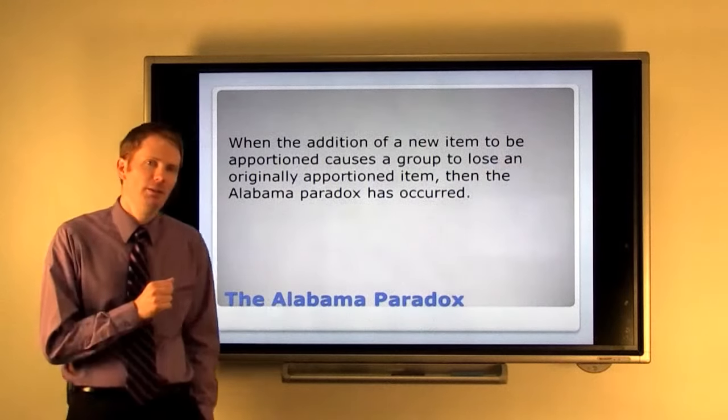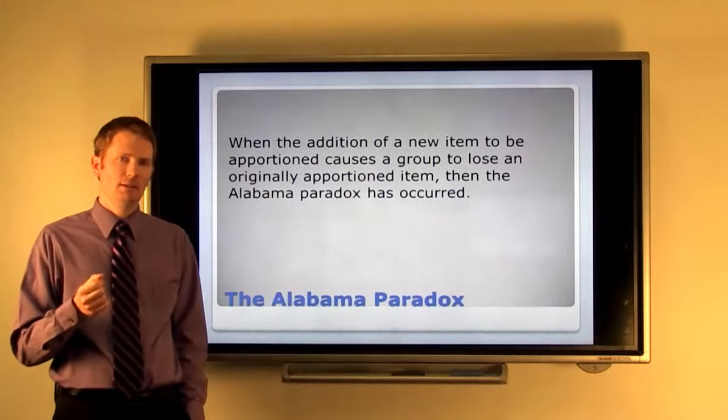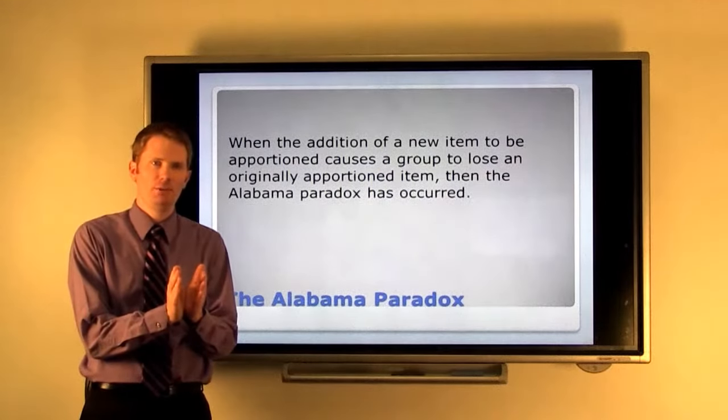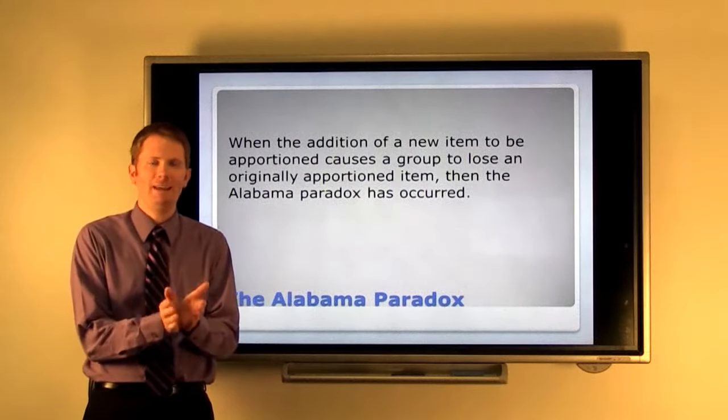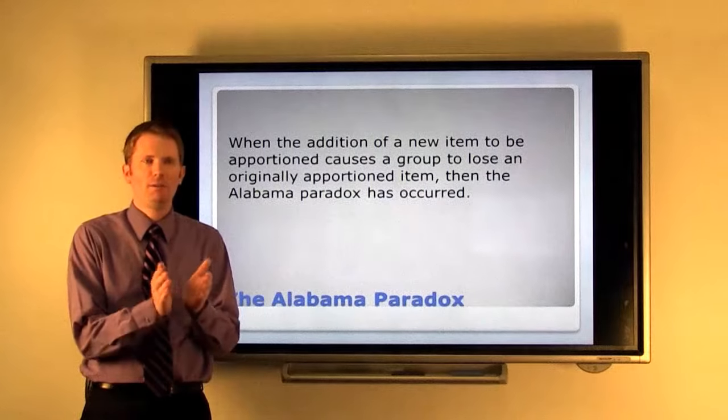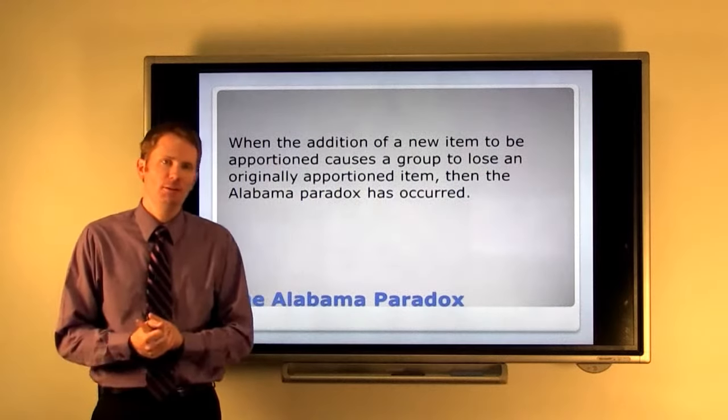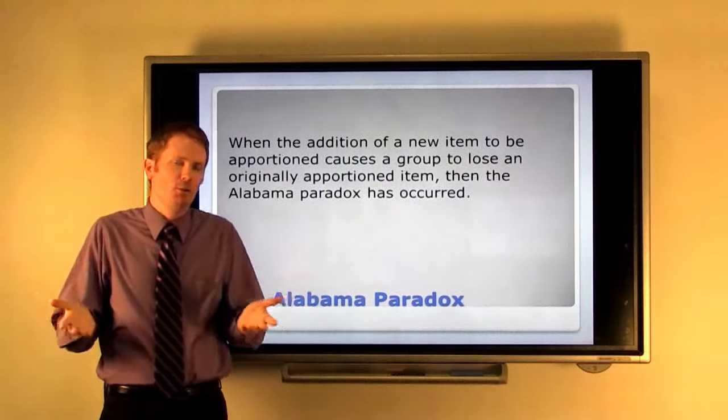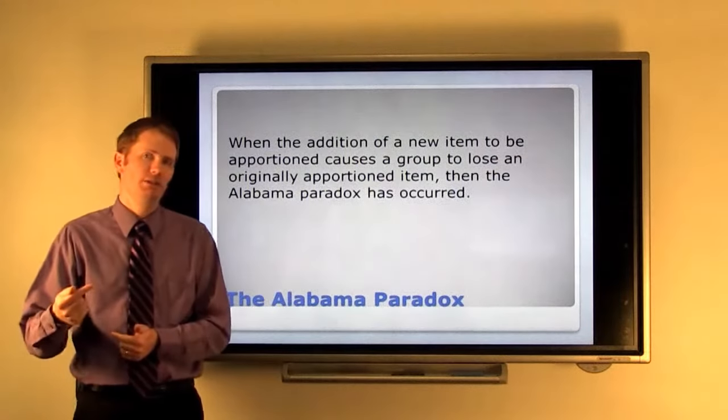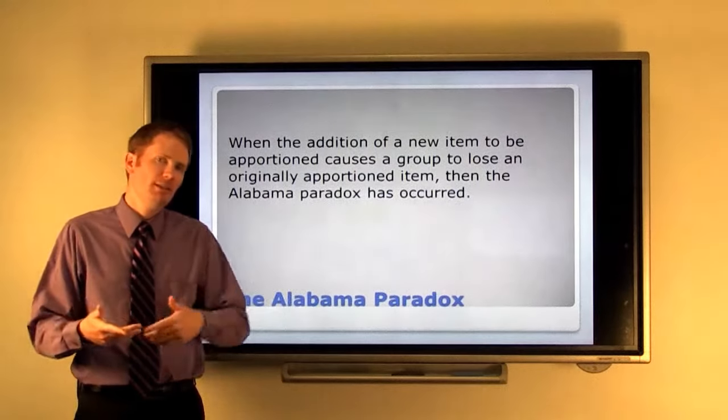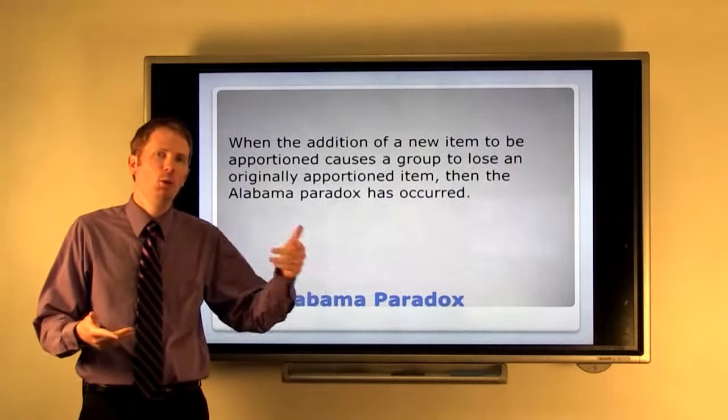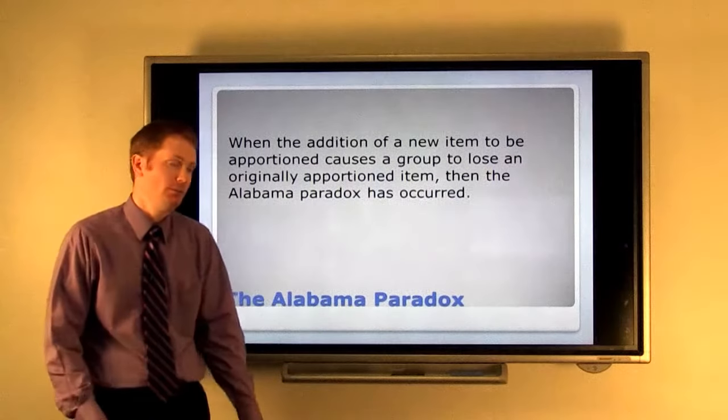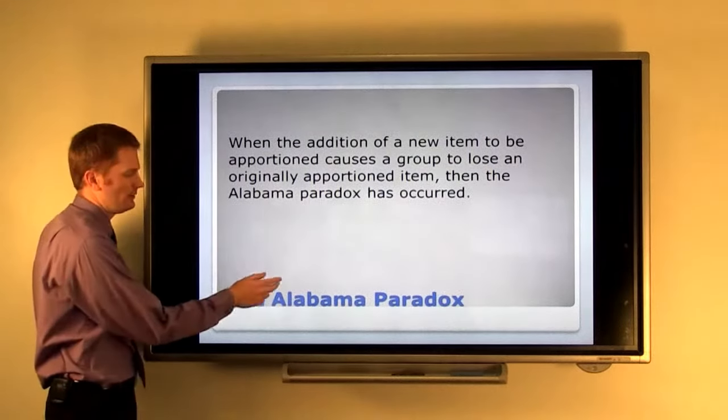This actually happened following the 1870 census. The house size, if it were kept at 299 representatives, Alabama would have gotten eight representatives. But if the house size was increased to a nice round number of 300, the state of Alabama only got seven. And that just seems paradoxical. Why should that happen? If we increase the number of representatives, doesn't that mean that somebody else just gets an extra seat? Why should Alabama have to lose a seat of representation? So that was one of the first paradoxes that was discovered.